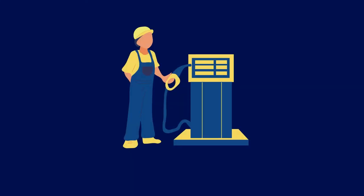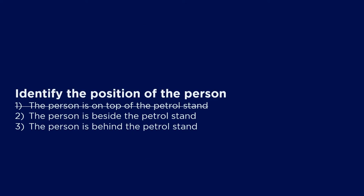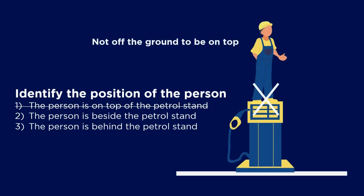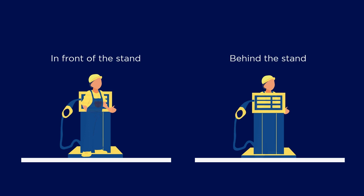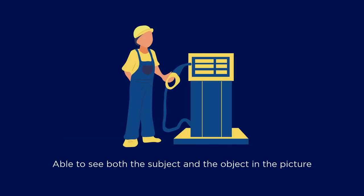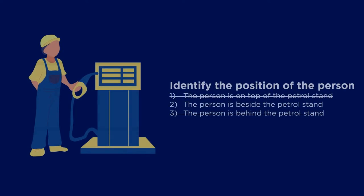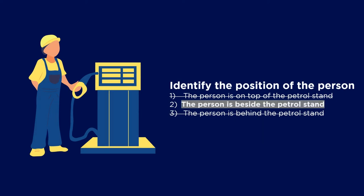So looking at the picture here, we can see that the person is standing on the ground. Thus option one is out, as the person is not off the ground to be on top of the stand. Secondly, if you are in front of or behind something or someone, one of you would be blocked and we wouldn't be able to see both subjects in full view. But in this picture, we are able to see both the person and the petrol stand clearly. Thus option three is out as well. The person couldn't be behind the stand, and that leaves us with option two, beside the stand.